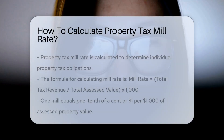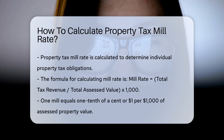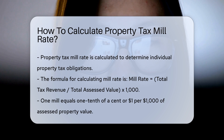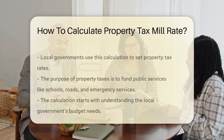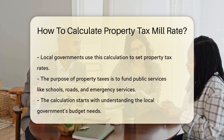The property tax mill rate is determined by dividing the total assessed value of taxable property by the total amount of tax to be raised. The formula is: mill rate equals total tax revenue divided by total assessed value, times 1,000. The mill rate is expressed in mills, with one mill equal to one-tenth of a cent, or $1 per $1,000 of assessed value.